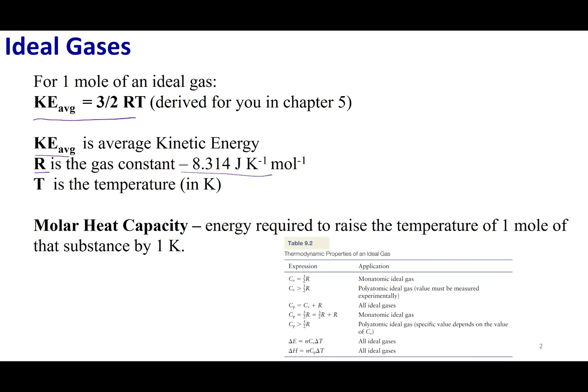R is our gas constant, and since we want it in joules, we're going to use 8.314 joules per Kelvin per mole, and T is the temperature in Kelvin.